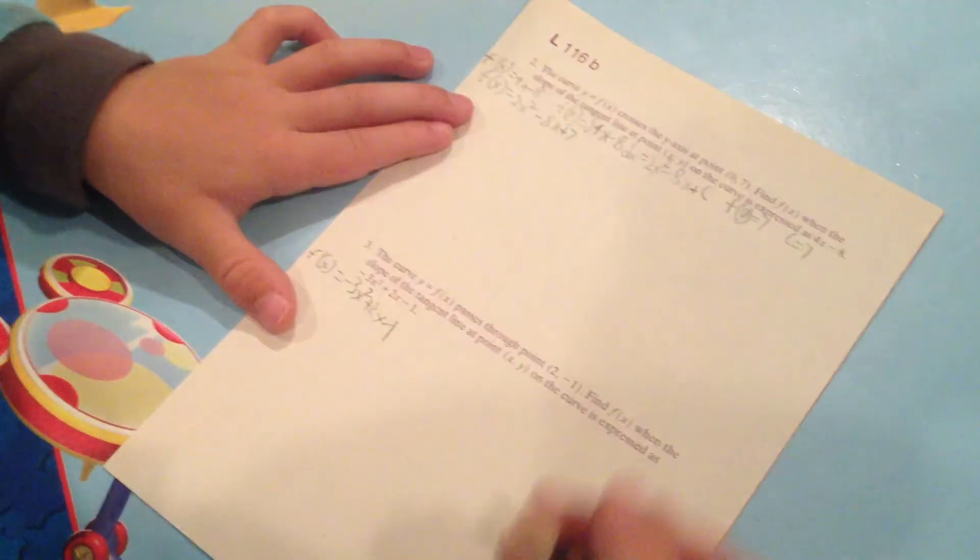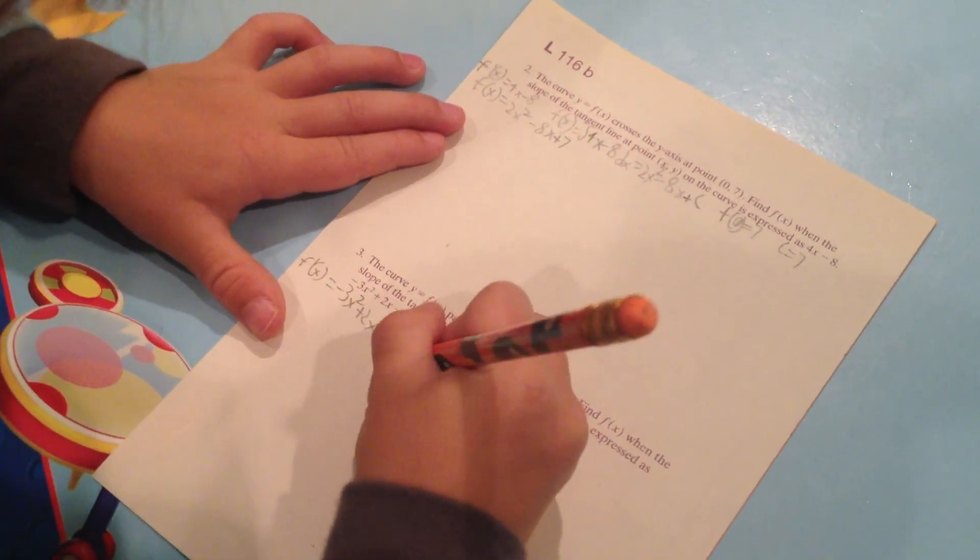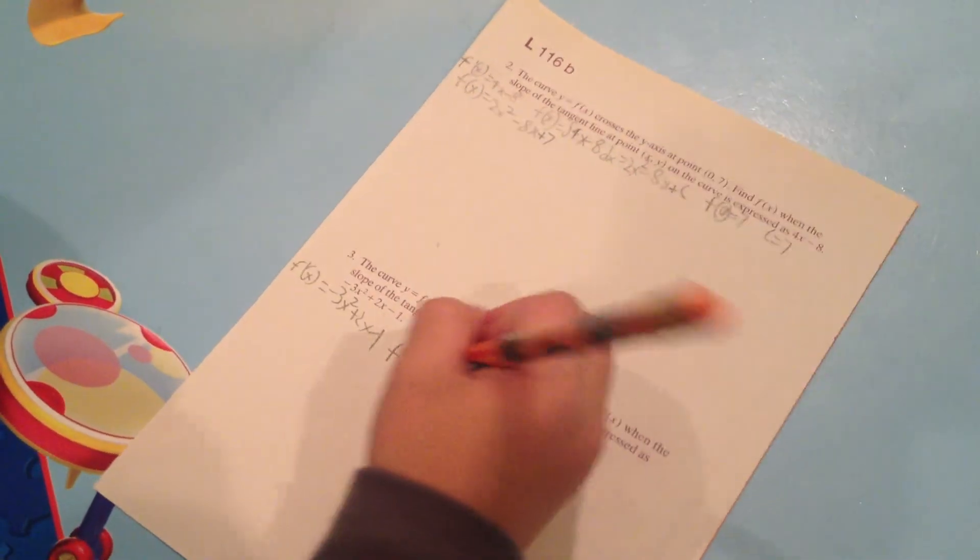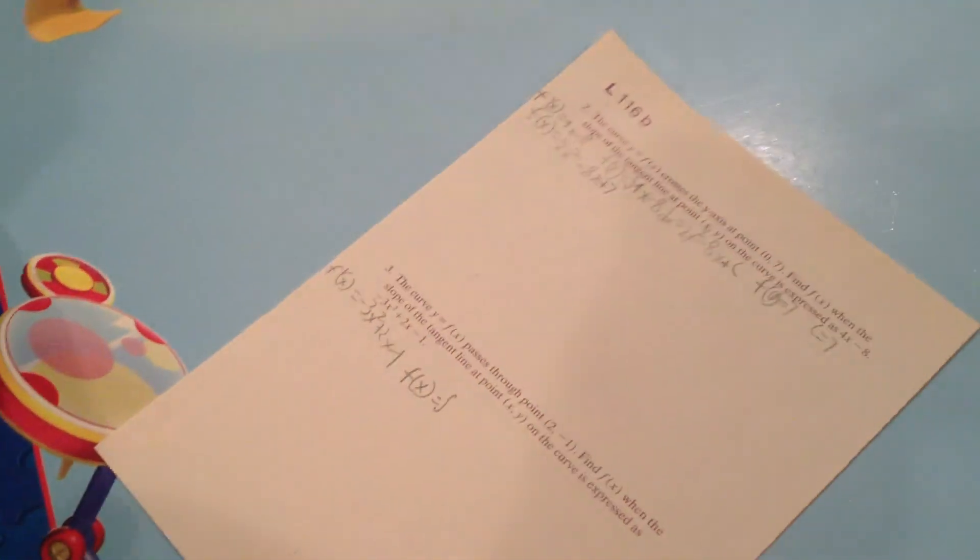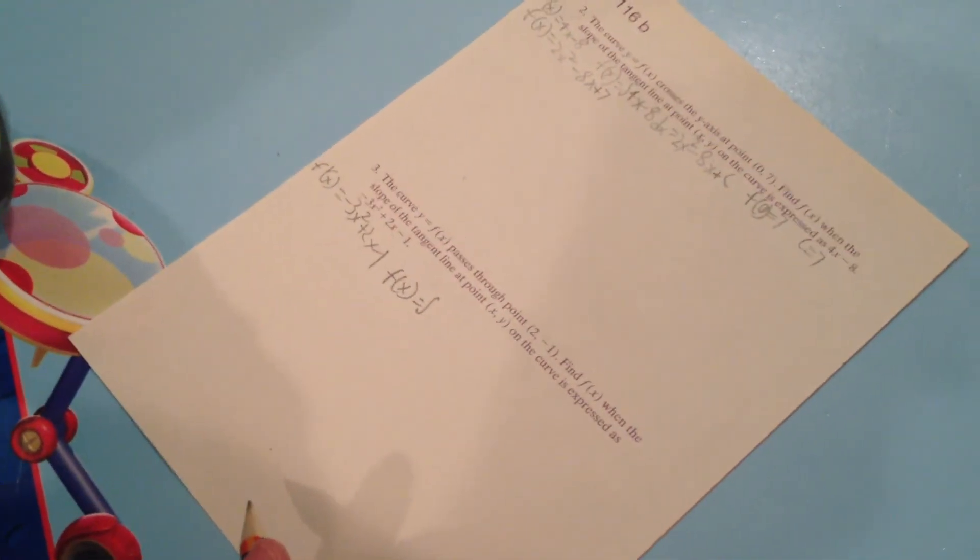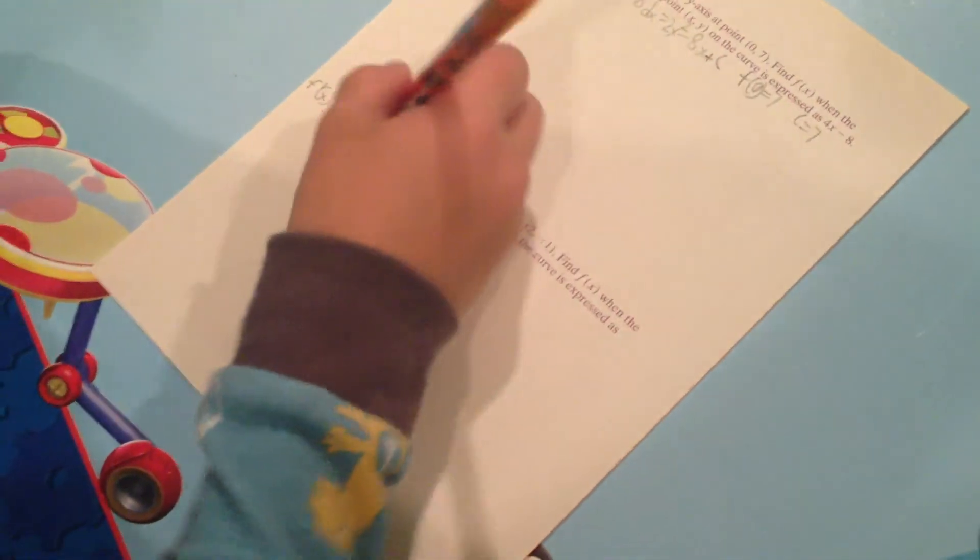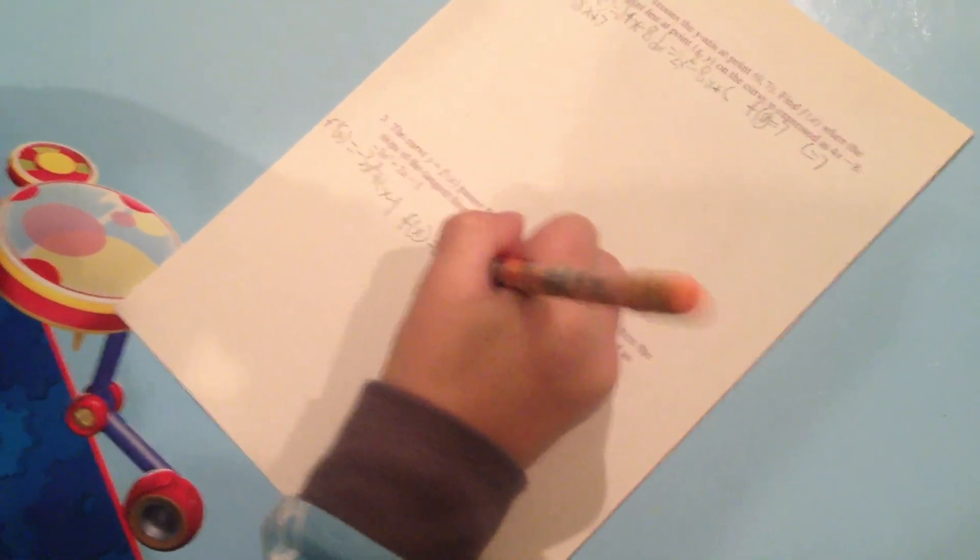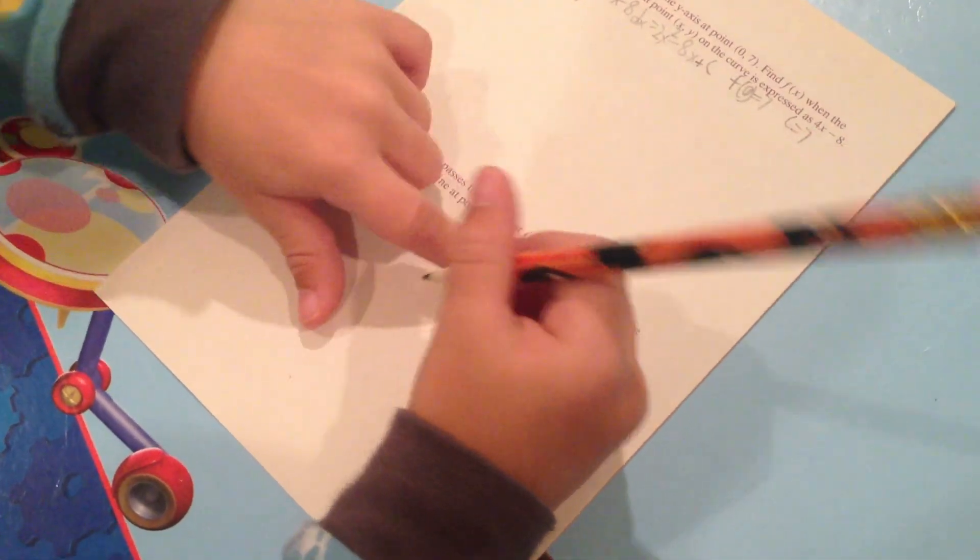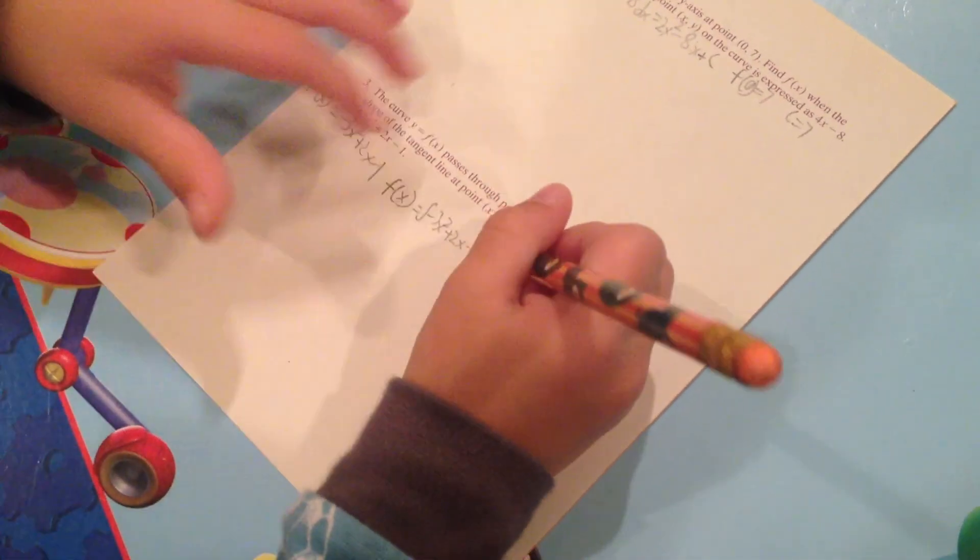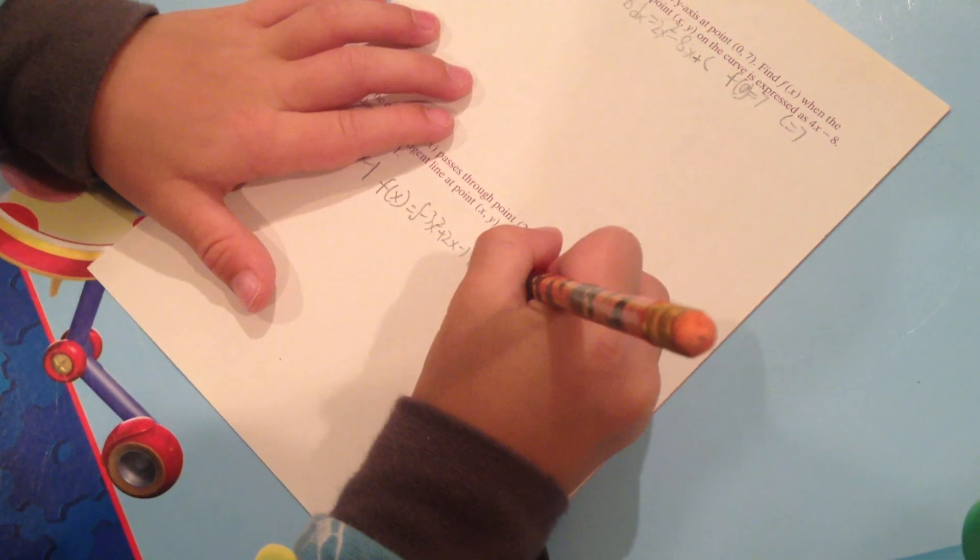Next thing is find f of x. Equals the big skinny integral sign. That looks really skinny. Not like this one. This one's fat. So we wrote the big integral sign now. Copy this down. Negative three x squared plus two x minus one. Well, dx is for all of this, so I'm just going to put dx right here.